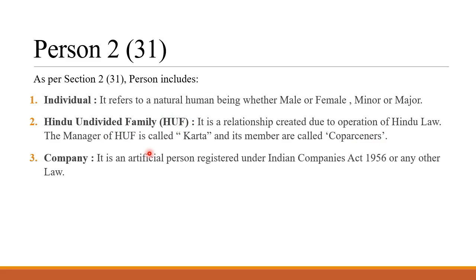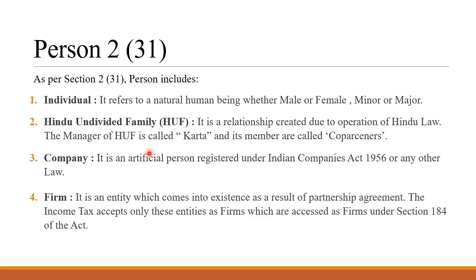3. Company — it is an artificial person registered under the Indian Companies Act of 1956 or any other law. Even a company comes under 'person.' 4. Firm — it is an entity which comes into existence as a result of a partnership agreement. The income tax accepts only those entities as firms which are assessed as firm under section 184 of the Act. So when we talk about a person, an individual, a HUF, a company, and a firm all come under the heading 'person' and are all eligible to pay direct tax.